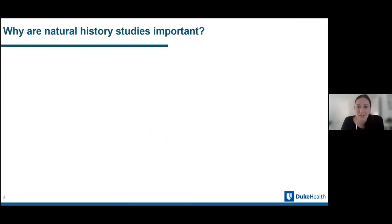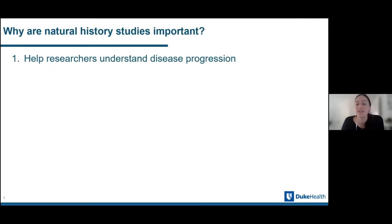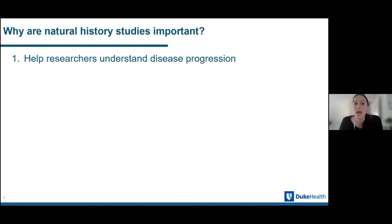Natural history studies are so important because they help researchers understand disease progression. At a bare minimum, we need to understand how this disease is progressing, when certain symptoms are arising, and how we could better develop treatment. As we think about clinical perspectives, we have to understand at what point to treat a disease — is it too late at this point, or is this the perfect time? Unfortunately, we still don't fully understand the disease progression of GSD4 and APBD. There have been some wonderful researchers putting out data in the past couple of years, but if we could do this internationally with a giant cohort, that's where we'll get the most data and represent the most patients.